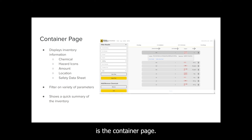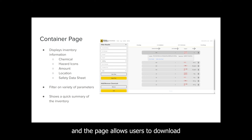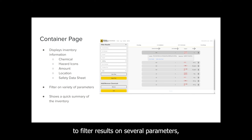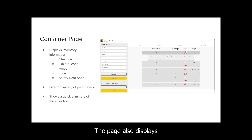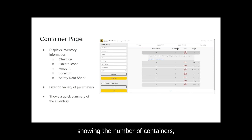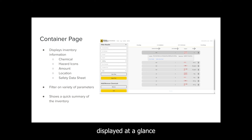The main page of the application is the container page. This page displays information about the containers in the current inventory and allows users to download the CFD data sheet for the chemical. The page allows users to filter results on several parameters, including chemical name and location. The page also displays a quick summary of the inventory, showing the number of containers, total amount, and the number of locations displayed at a glance.